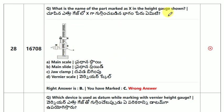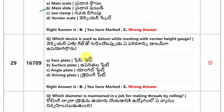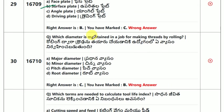Part 20 — height gauge. Main slide. Which device is used as a reference while marking with a vernier height gauge? The answer is surface plate.